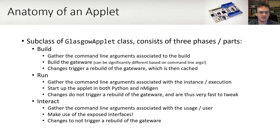Looking at the anatomy of an applet, there are largely three phases. The build phase constructs and builds the gateware. The run phase connects the gateware in the FPGA to the Python. And the interact phase presents the applet to the outside world. Not all applets have an interact phase. For example, the VGA is just a test pattern generator, so it produces that test pattern on the output and then the application quits, leaving the test pattern going.